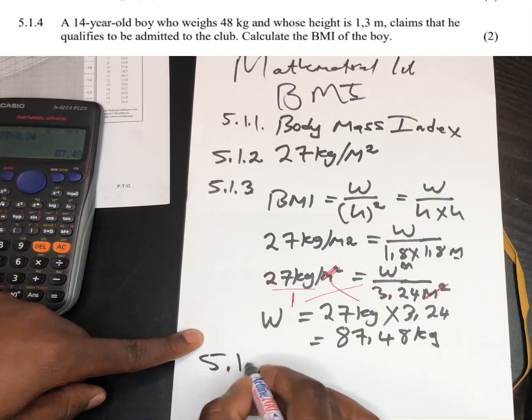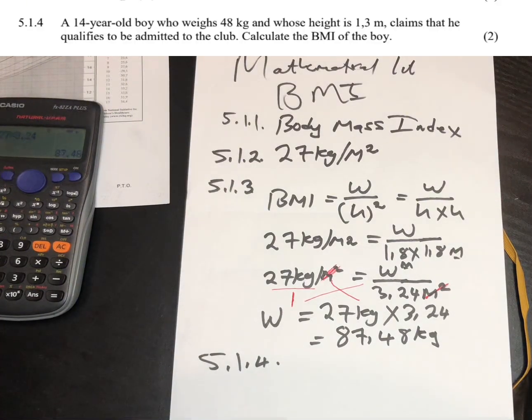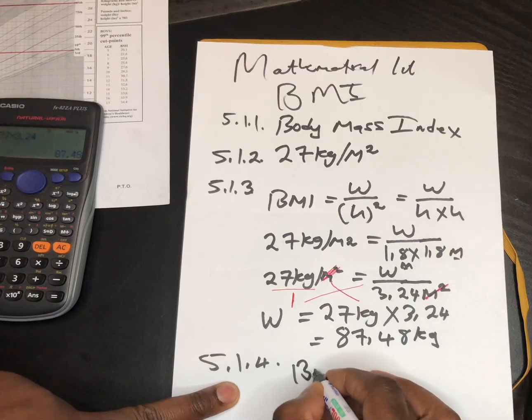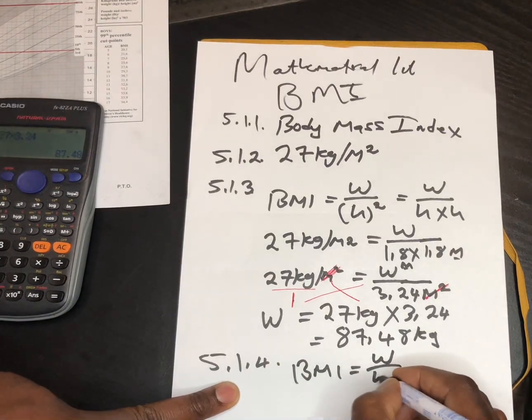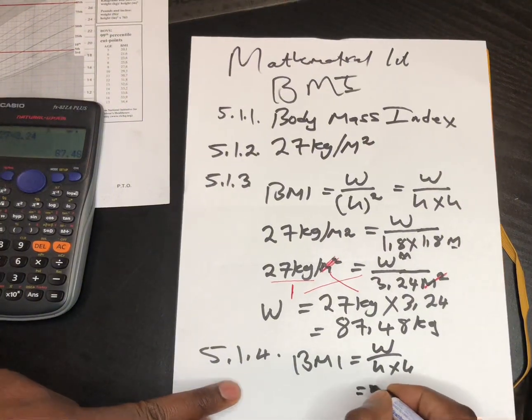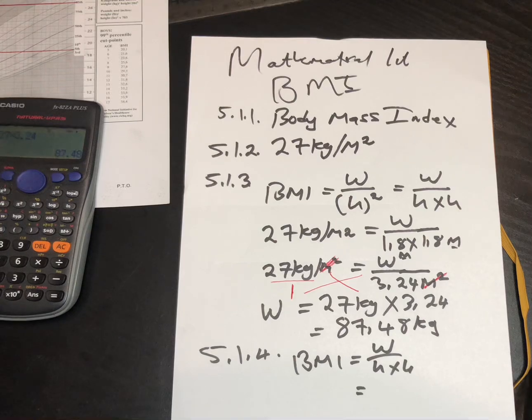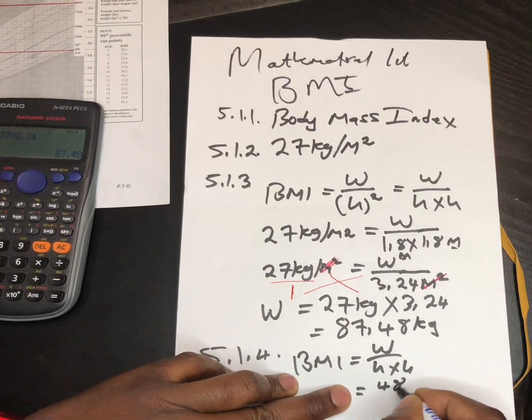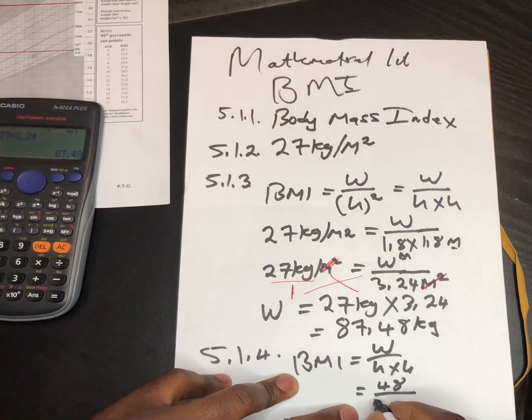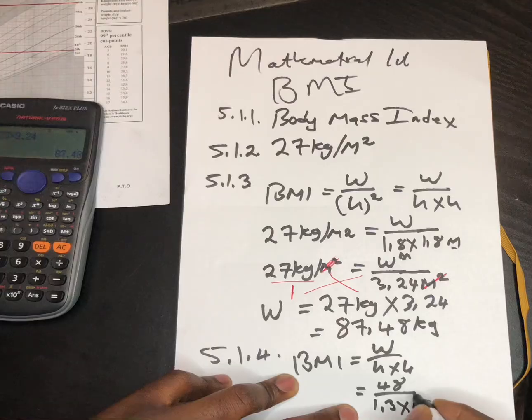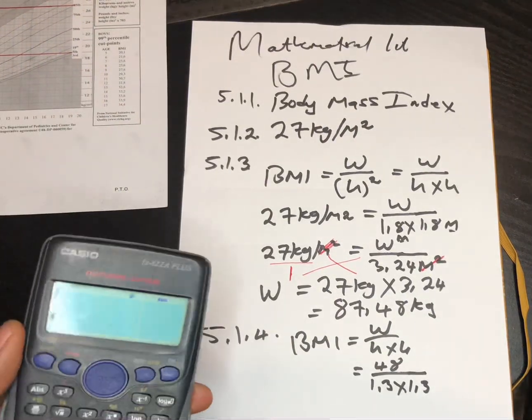Moving to the next one, 5.1.4. It says that a 14-year-old boy whose weight is 48 kg whose height is 1.3 meters claims that he qualified to be admitted to the club. Calculate the BMI of the boy. So we're calculating the BMI. We know that we're going to say BMI equals weight divided by height multiplied by height. Then the weight of this boy is given as 48 over height multiplied by height which is 1.3 multiplied by 1.3.